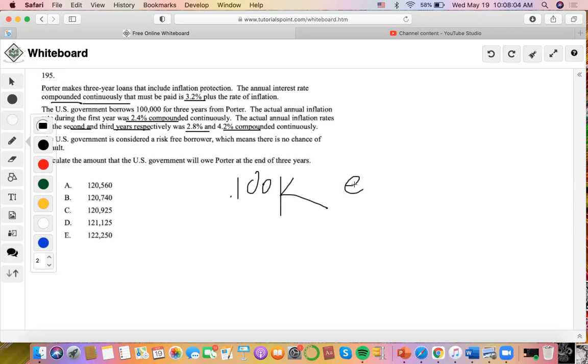So what we're going to do is E to the 0.032 plus the rate of inflation in the first year, right? And then times E to the 0.032 plus the rate of inflation in the second year.